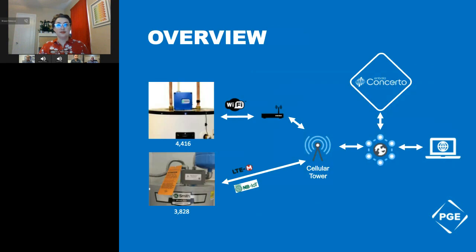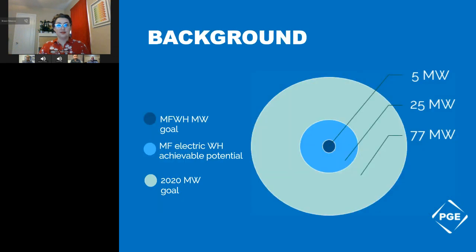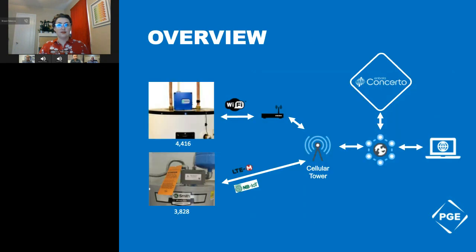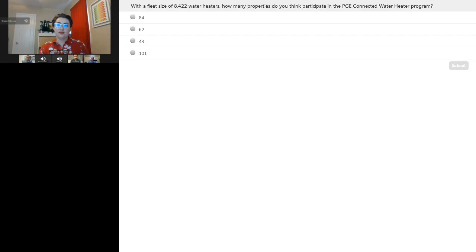We have two switch types in the field — both through Wi-Fi connection as well as a cell-enabled connection. We're finding both have their pros and minuses. Cell seems to be having a little more connectivity, while Wi-Fi is providing a little more productivity. All cellular connections go through cell towers, and we use the Imbara Concerto platform to control everything — turning switches on and off and reporting the energy that was shifted.